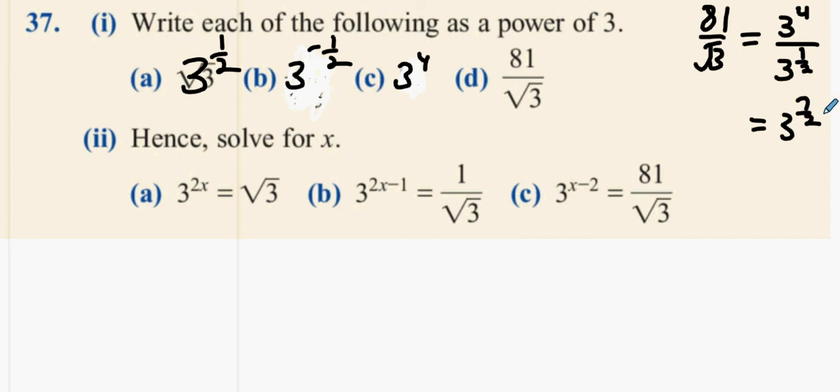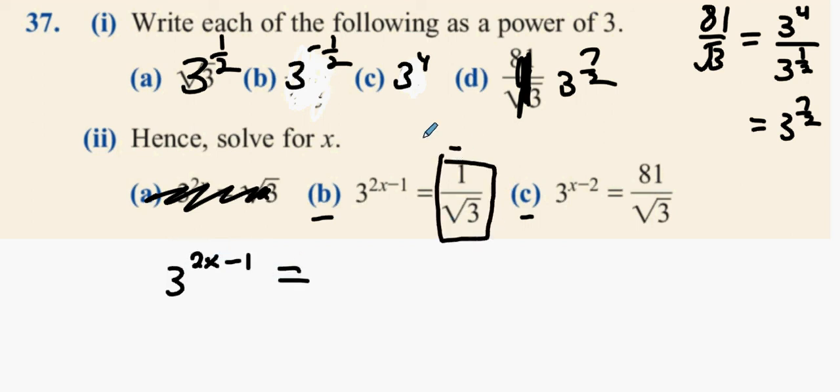All righty. Now which one of these you want? B and C? No bother, right. You will leave out A for the time being. Now what can I change this into? Three to the power of 2x minus 1 equals what? What can I change this with? Three to power minus a half.